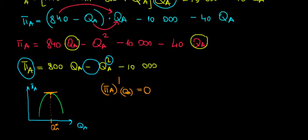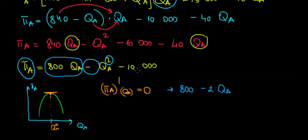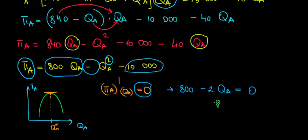Differentiating each term: the derivative of 800QA with respect to QA is 800; the derivative of QA squared is 2QA; and the derivative of the constant 10,000 is zero. Setting the derivative equal to zero: 800 minus 2QA equals 0, which gives 800 equals 2QA, meaning QA equals 400.